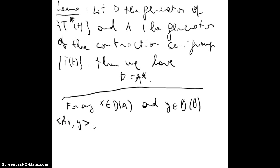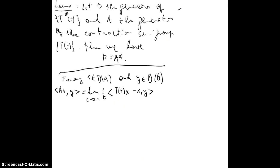We consider inner product of <Ax, y>. This will be equal to the limit when t goes to 0 of 1/t times the inner product <T(t)x - x, y>. Now one can consider, well, what is this? We have <T(t)x - x, y>. That can be written also as <T(t)x, y> minus <x, y>.